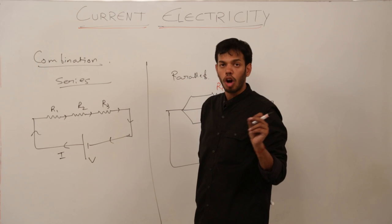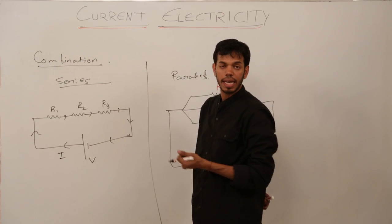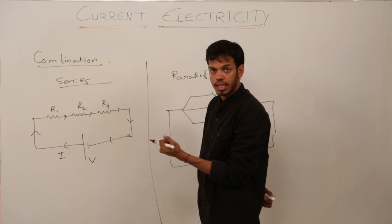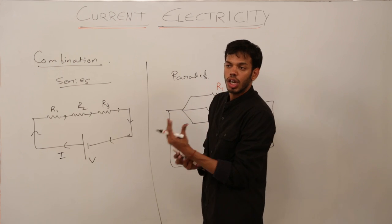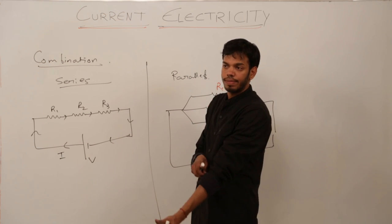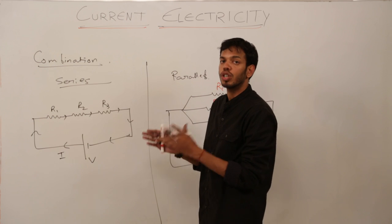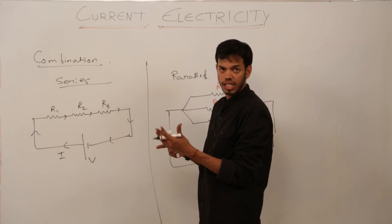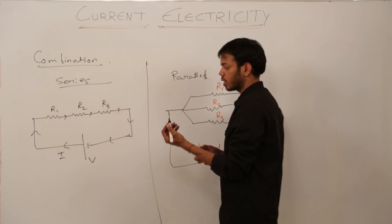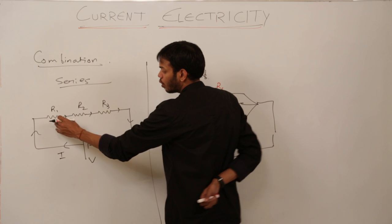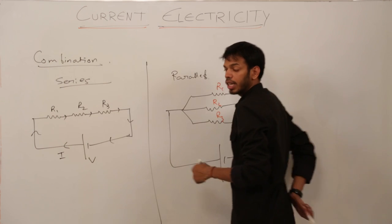This word 'component' — we will be using it for resistors, capacitors, inductors, anything which accepts some voltage from the circuit where there is a potential difference across its ends. So there is a potential drop across each resistor.